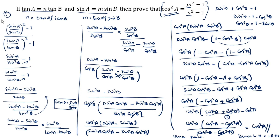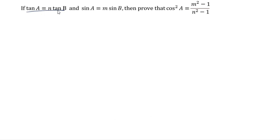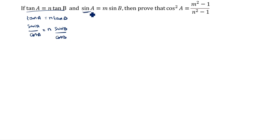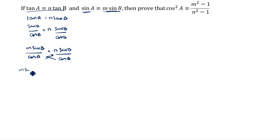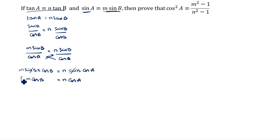This is the first method. We will now see the second method. First, we take tan a is equal to n tan b. Using tan theta equals sin theta divided by cos theta, we write sin a divided by cos a is equal to n times sin b divided by cos b. Since sin a equals m sin b, we substitute: m sin b divided by cos a equals n sin b divided by cos b. Sin b and sin b cancel, giving m cos b is equal to n cos a. This is equation 1.